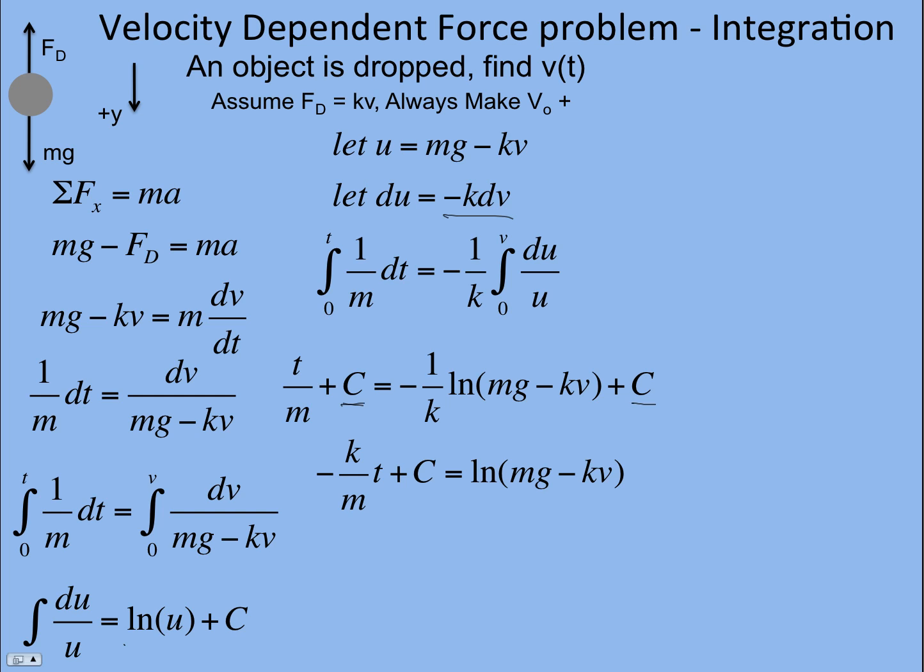And so now what we need to do is take both sides to e, so we get rid of the natural log. And so e to the negative k over mt plus c equals e to the natural log of mg minus kv.